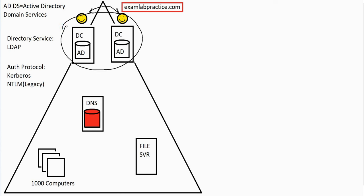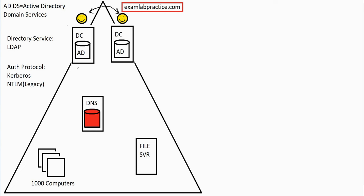Machines that need to authenticate with domain controllers can query DNS, asking for the address of a domain controller, and DNS replies with the information so the client can authenticate. All of this together — this domain controller concept — provides centralization. We moved away from peer-to-peer networking, where every machine was its own boss, to working in a centralized environment. Domain controllers and DNS both help us centralize, giving us central control over things.